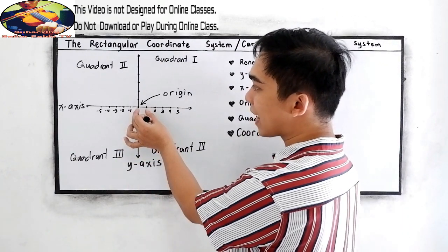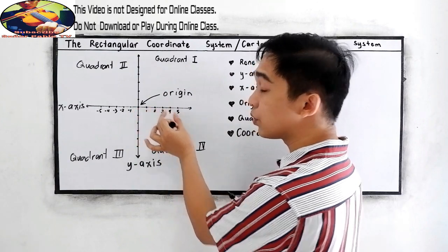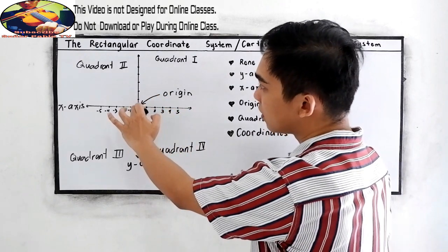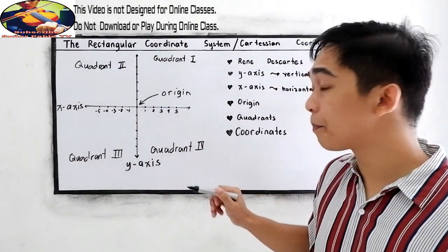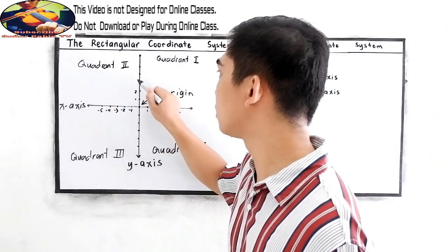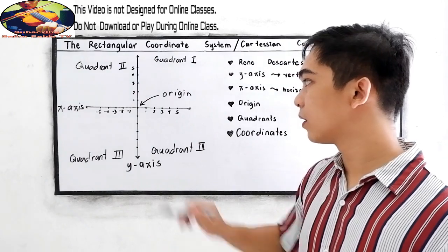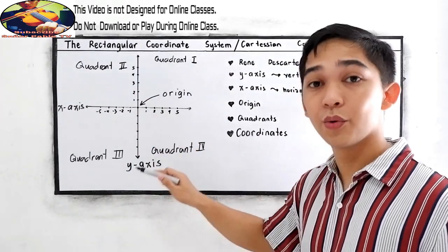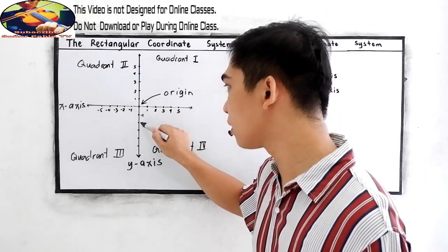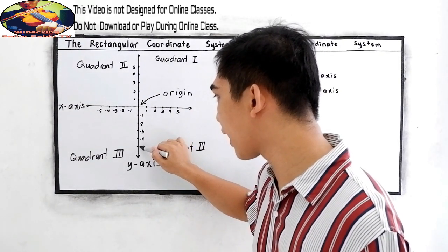Make sure that you have calibrated the distance into equal parts, because that indicates our units. Upward from our origin, we have the positive numbers: 1, 2, 3, 4, and 5. And below our origin, we have the negative numbers: negative 1, negative 2, negative 3, negative 4, and negative 5.